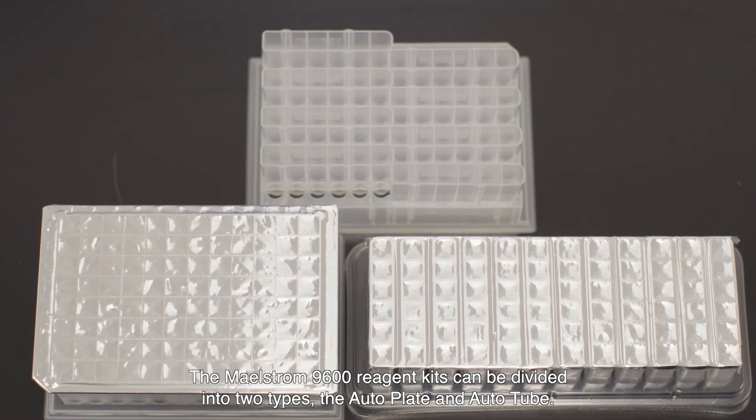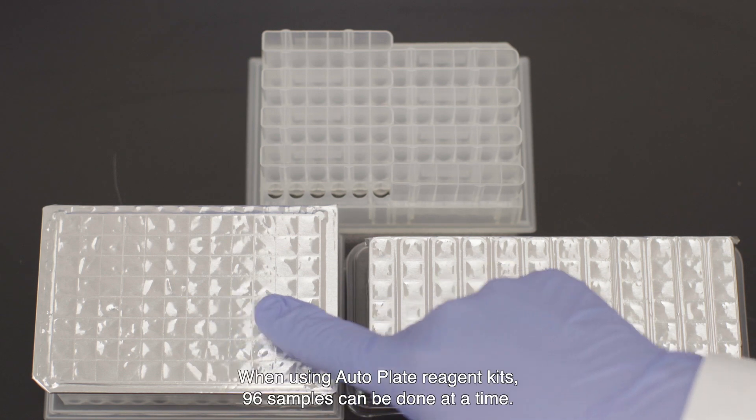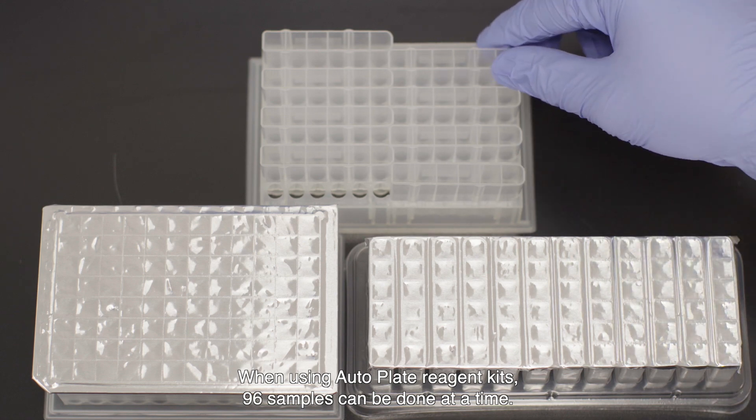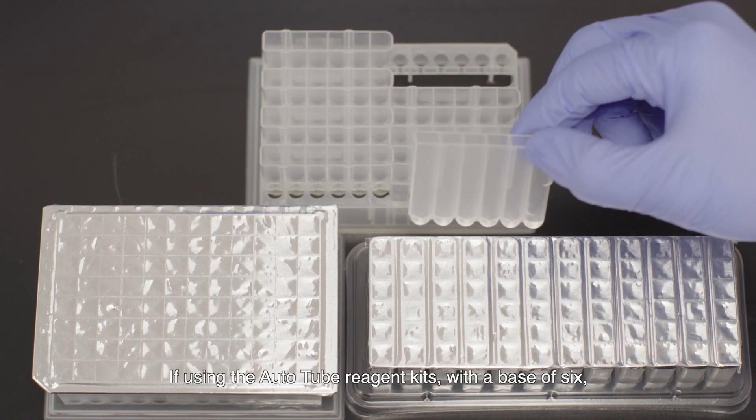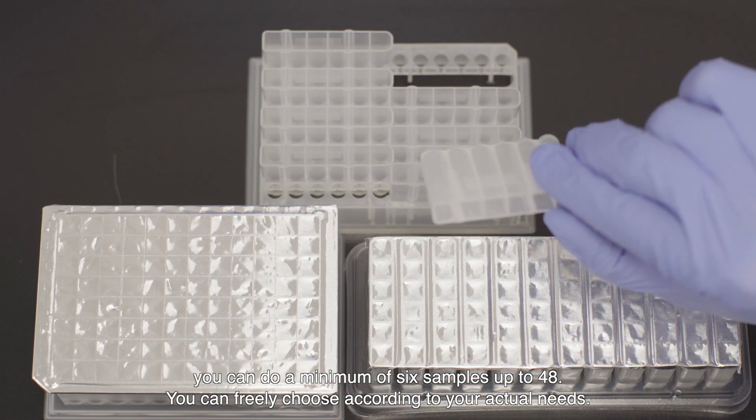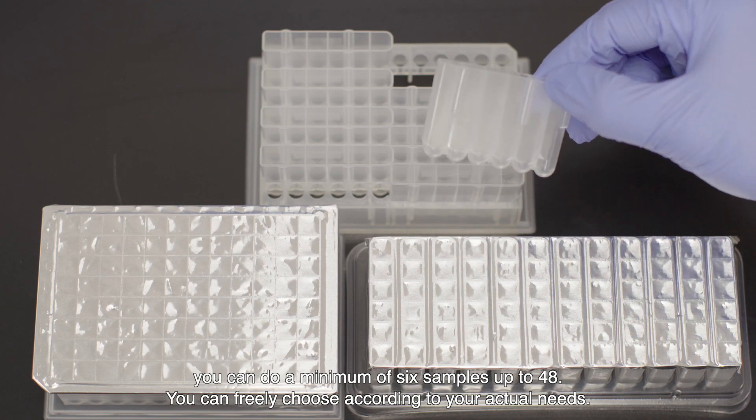The Maelstrom 9600 reagent kits can be divided into two types, the auto-plate and auto-tube. When using auto-plate reagent kits, 96 samples can be done at a time. If using the auto-tube reagent kits, with a base of six, you can do a minimum of six samples up to 48. You can freely choose according to your actual needs.